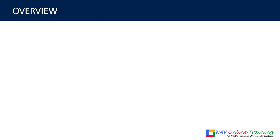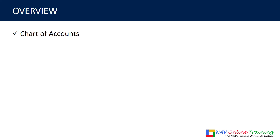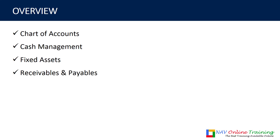So let's see what you will learn inside this module. First, you will learn about chart of accounts — what it is and how it looks. Then we'll talk about cash management, then fixed assets. You will also learn about receivables and payables, cost accounting, cash flow, and finally we'll do a review.